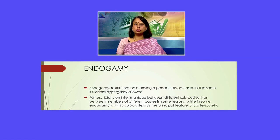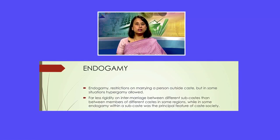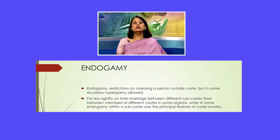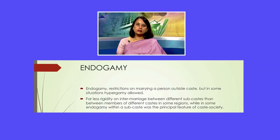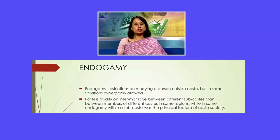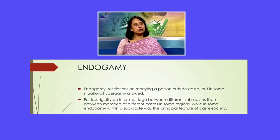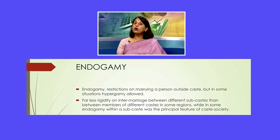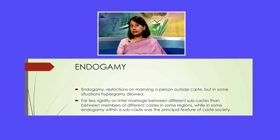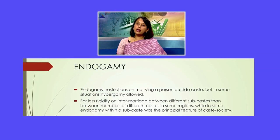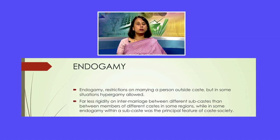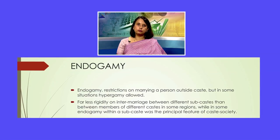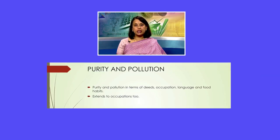Endogamy refers to marriage practices — specifically that a person can only marry someone within the same caste group. There were very strict rules governing inter-caste marriages; people could only marry within the same caste but across different subcastes, meaning people from different regions of the same caste could marry one another. Honor killings typically occur when people break this rule and practice exogamy — that is, marrying outside their caste group.